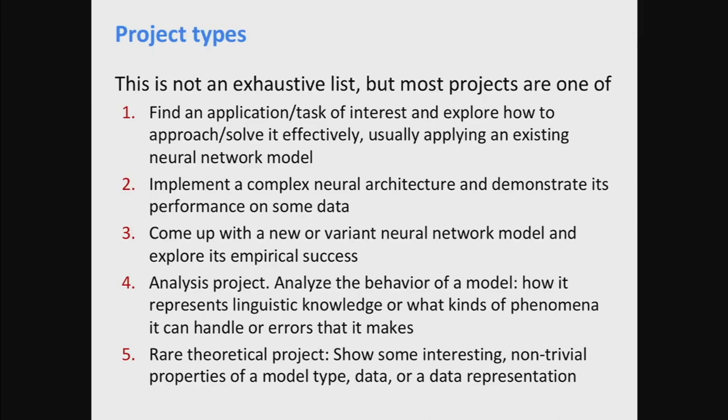Down at the bottom is the rarest kind of project, which is when some people try to do something theoretical — proving some properties of a system. This is easiest to do in simple systems, for something like word vectors, where you might want to prove something about the kind of spaces induced by word vectors and what properties you need for word analogies to work.